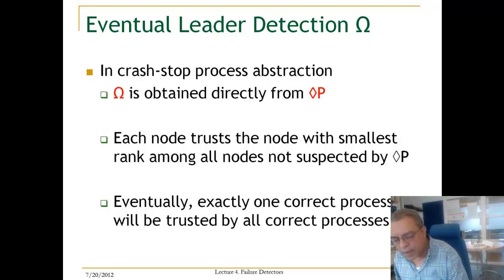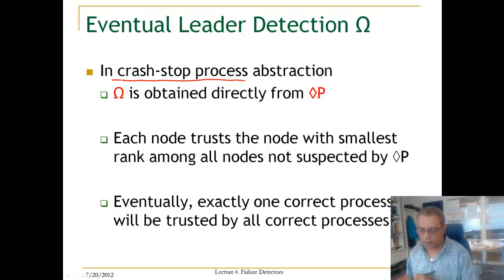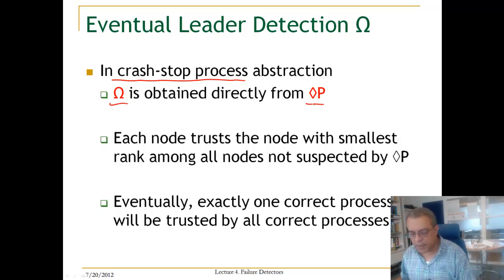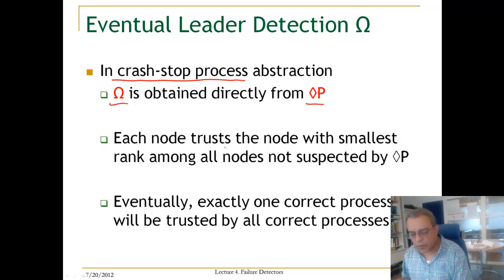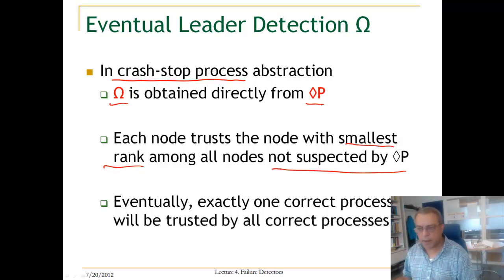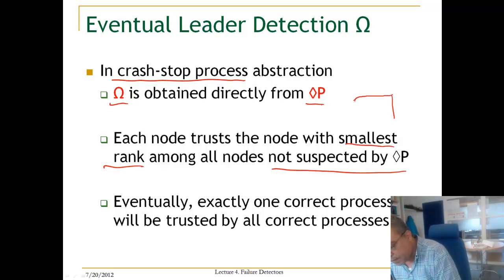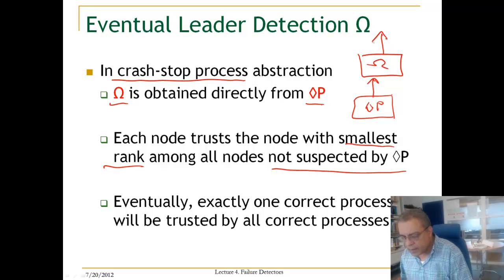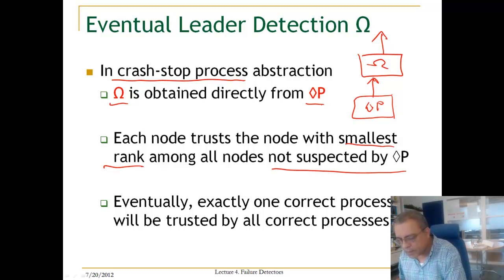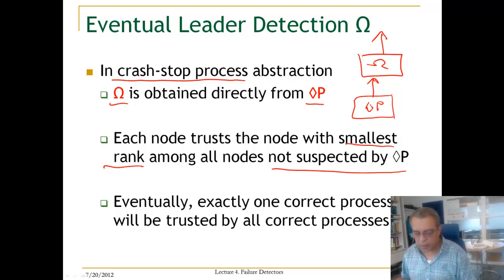Let us look at the eventual leader election algorithm for a crash-stop process abstraction. This can be obtained directly from diamond P. The basic idea is that each process will trust the node with the smallest rank among all nodes not suspected by diamond P. You suspect something and remove it; if you trust something you add it again, and you always trust the node with the smallest rank.